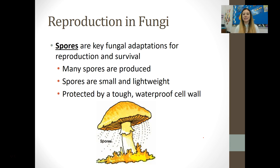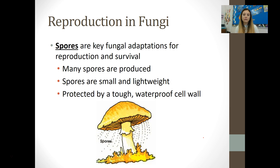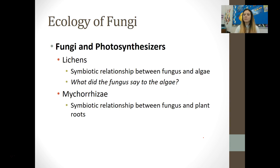Spores are a key fungal adaptation for reproduction and survival. Fungi produce a ton of them at once. They are very small and lightweight, which allows them to be carried by the wind. They are covered by a tough, waterproof cell wall, which allows them to survive in harsh environments and grow when conditions become favorable. Fungi can also have mutualistic relationships with photosynthesizers. Great examples of this are lichens and mycorrhizae.